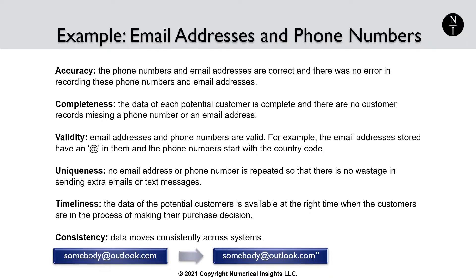Validity ensures that email addresses and phone numbers are valid. For example, the email addresses stored have an at symbol in them and the phone numbers start with the country code, so that the email addresses and phone numbers can be processed by an automated text and email system. Uniqueness means that no email address or phone number is repeated, so there is no wastage in sending extra emails or extra text messages.